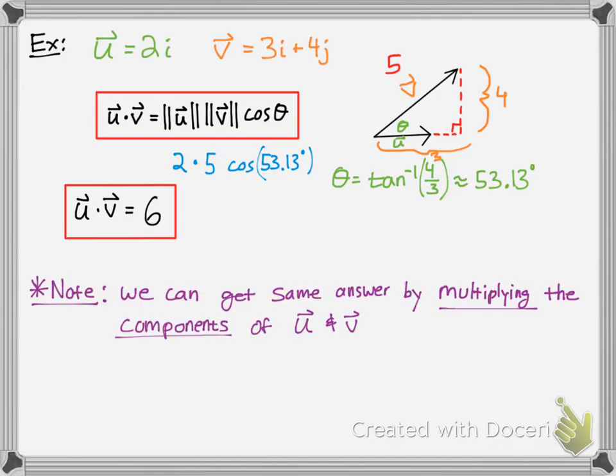One thing to note is that we can get an easier way of doing this by multiplying the components of u and v in vector notation. Taking this same example, the j component of u would be 0. So you simply do 2 times 3, and then add 0 times 4, taking the i's and the j's and multiplying those together, and you still get the same answer.